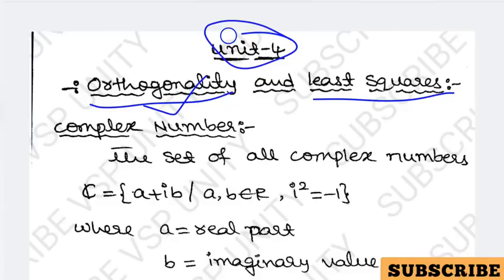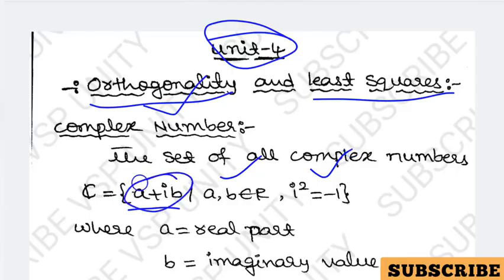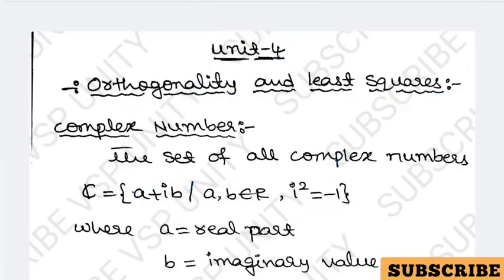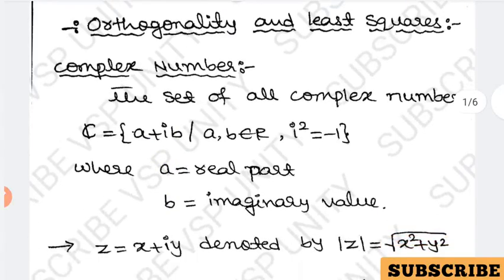The set of all complex numbers is equal to a plus ib, where a and b belong to R, and i squared is equal to minus 1. Numbers which are in the form of a plus ib are called complex numbers. Here a is the real part and b is the imaginary value.